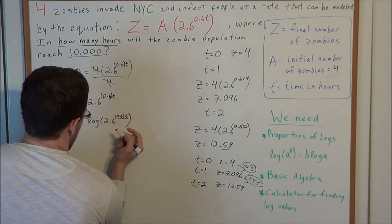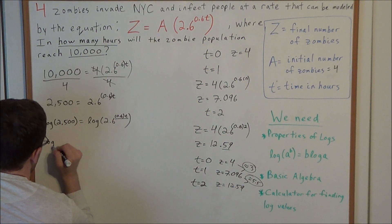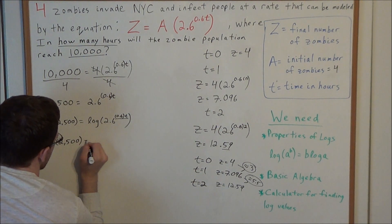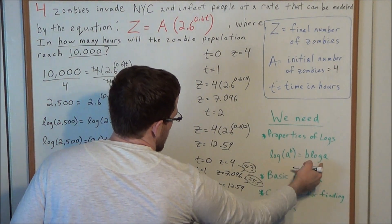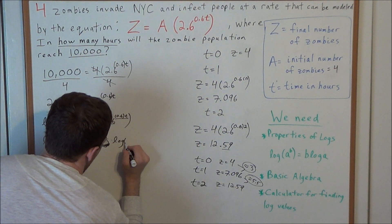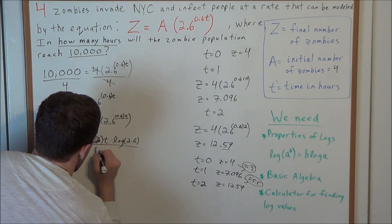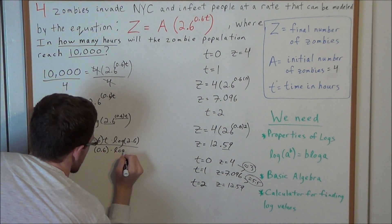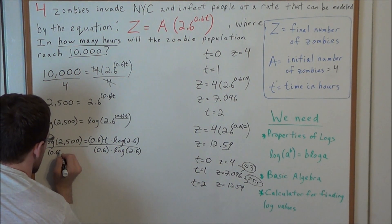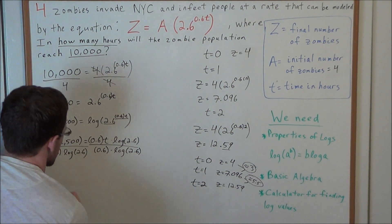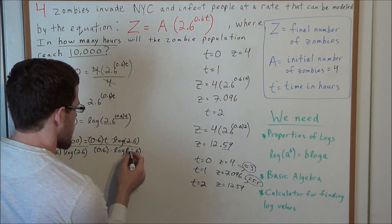Keeping in mind that the exponent is 0.6 times T, we bring it in front: log(2500) equals 0.6 times T times log(2.6). To isolate T, we divide both sides by 0.6 and by log(2.6). On the right-hand side, 0.6 cancels with 0.6 and log(2.6) cancels with log(2.6), leaving T on its own.